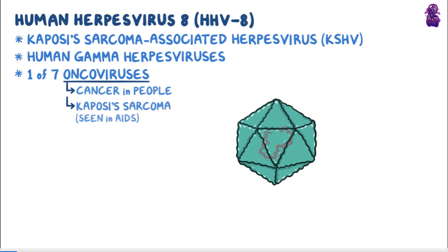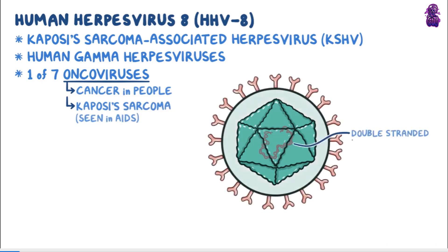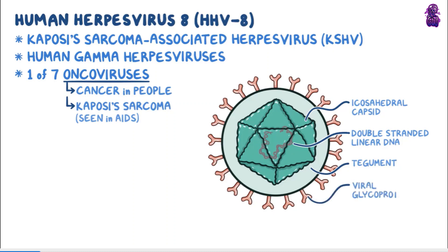Human herpesvirus 8 is a large double-stranded linear DNA virus surrounded by an icosahedral capsid, which is a spherical protein shell made up of 20 equilateral triangular faces. The capsid is covered by a protein layer called the tegument, and finally enclosed in an envelope, which is a lipid membrane that contains viral glycoproteins and is acquired from the nuclear membrane of host cells.